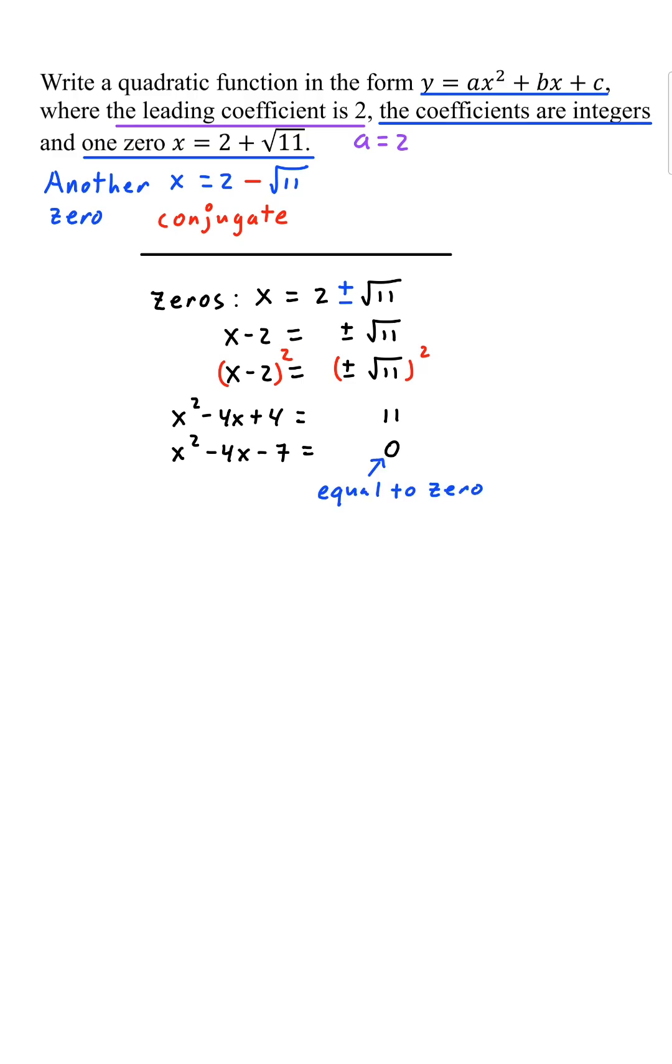This equal to 0 is important because that means x squared minus 4x minus 7 is a factor. With the zeros, x equals 2 plus square root 11 and x equals 2 minus square root 11. So, let's write our function.